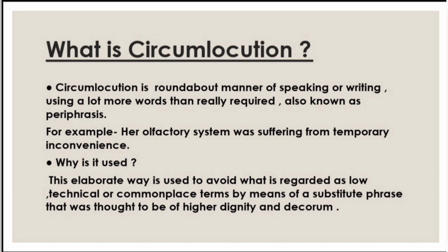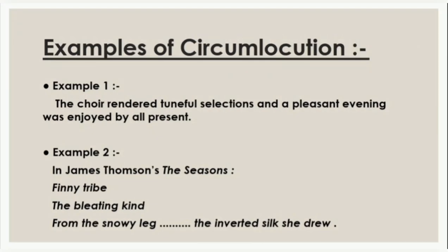So that was all about the meaning of circumlocution — it is a roundabout manner of expression or way of talking and writing. Let us now learn about some celebrated, well-known examples from the field of English literature. The first example: 'The choir' — note it is pronounced 'choir' — 'rendered tuneful selections and a pleasant evening was enjoyed by all present.' Instead of simple language, the meaning here was that the choir sang beautifully and everybody enjoyed a very good evening.